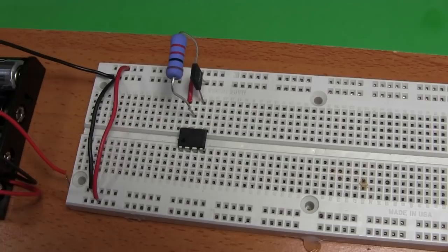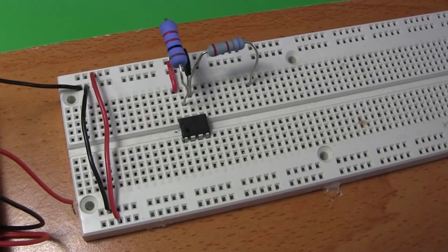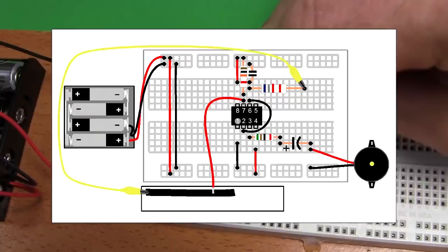Plug either leg of the 6.8 kilo ohm resistor in this hole and the other leg in this hole. I'll come back to that resistor again later. That's it for that side of the chip for now.